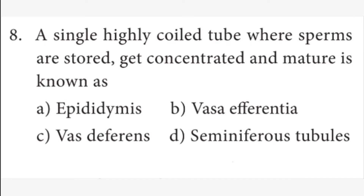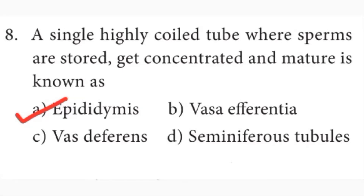Eighth question: a single highly coiled tube where sperms are stored, get concentrated and mature is known as? Answer is A option, epididymis. Epididymis is a storehouse of sperm, because the sperms are stored in epididymis.